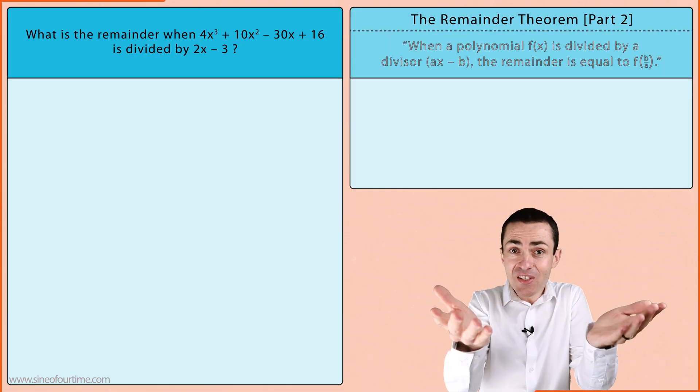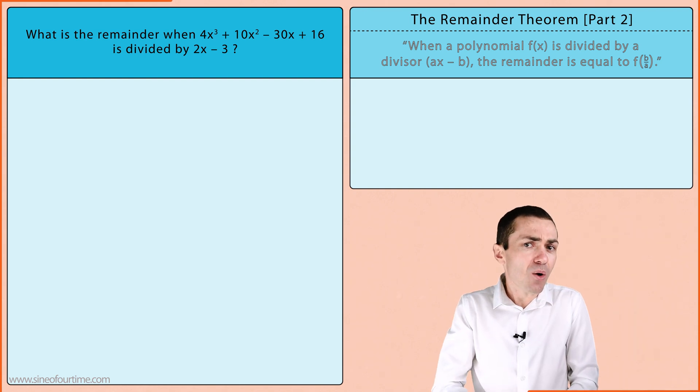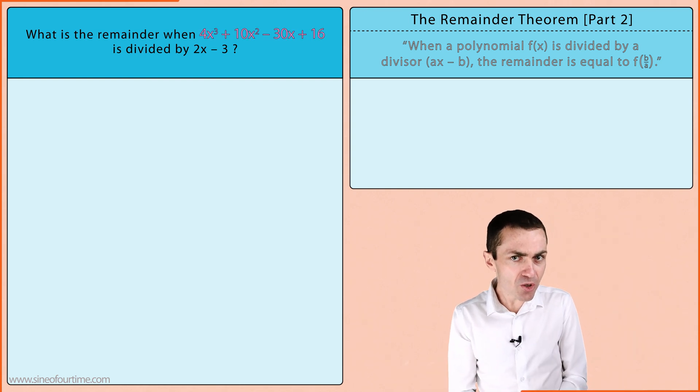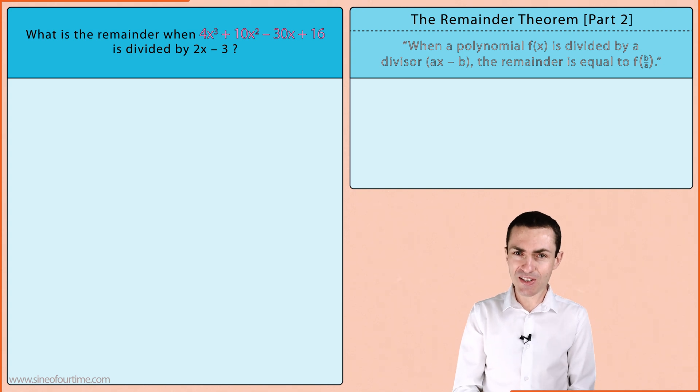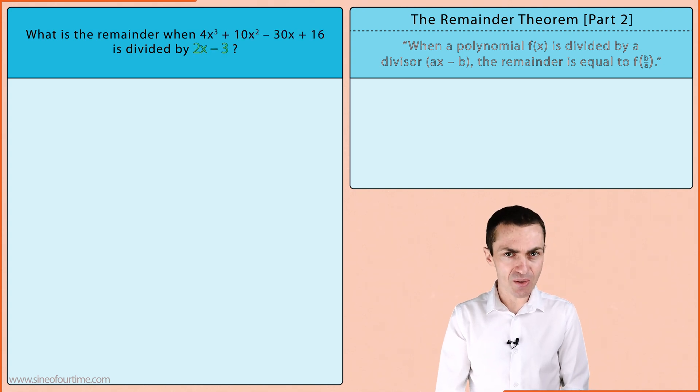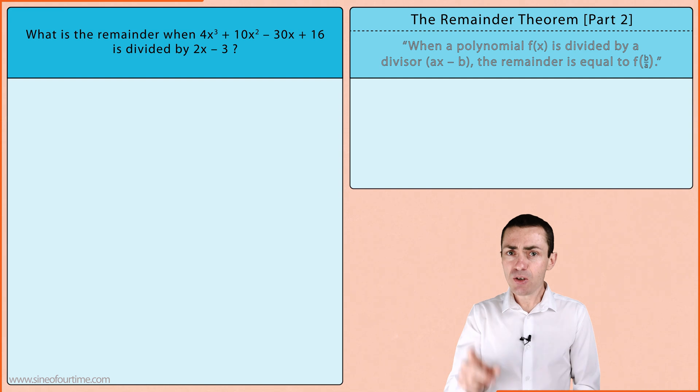Let's consider this example which asks what is the remainder when 4x³ + 10x² - 30x + 16 is divided by 2x - 3. We could start by creating a polynomial function from this expression by letting f(x) equal to that 4x³ + 10x² - 30x + 16.